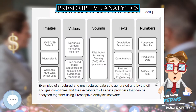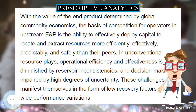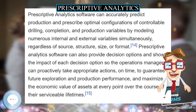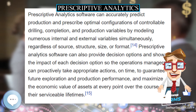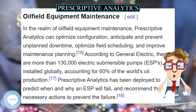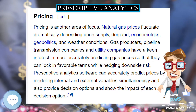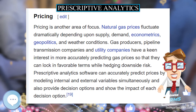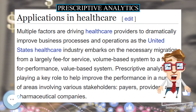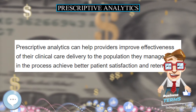Pricing is another area of focus. Natural gas prices fluctuate dramatically depending upon supply, demand, econometrics, geopolitics, and weather conditions. Gas producers, pipeline transmission companies, and utility companies have a keen interest in more accurately predicting gas prices so that they can lock in favorable terms while hedging downside risk. Prescriptive analytics software can accurately predict prices by modeling internal and external variables simultaneously and also provide decision options and show the impact of each decision option.